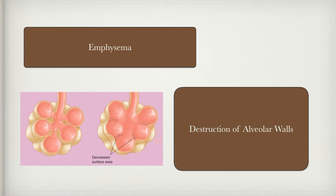Emphysema is almost always due to cigarette smoking, with a few cases from workplace exposure to toxins — firefighters, factory workers, coal miners. What happens is these toxins breathed in damage and destroy the alveoli. Normally if you could spread all the alveoli out, they'd cover about half a tennis court. But with emphysema, maybe it's just a quarter of the court, and if untreated, maybe an eighth of the court. You have less alveolar surface area, so you can't get as much oxygen in and CO2 out.